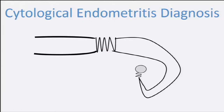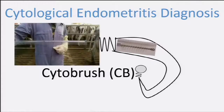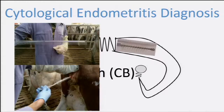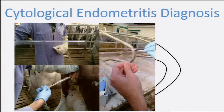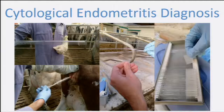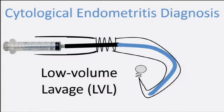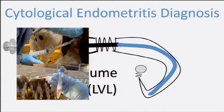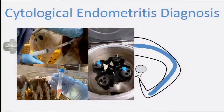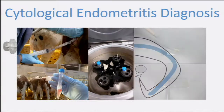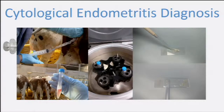I'm very fond of the cytobrush, but different parts of the world use different techniques — either the cytobrush or the lavage. With the cytobrush, it's very simple, like an insemination: you pass the cervix, collect the sample, and roll it on a slide. The lavage is a bit more difficult because you have to infuse liquid into the lumen of the uterus, collect it back, go to the lab, centrifuge the sample, and then prepare the smear on a slide.